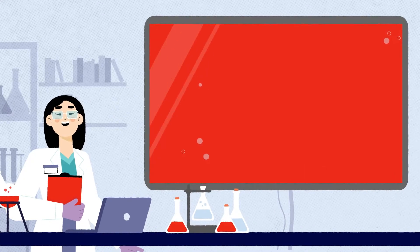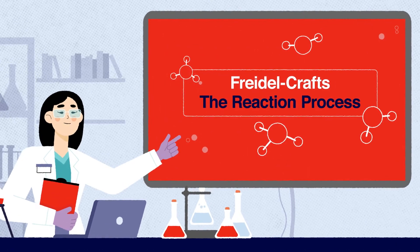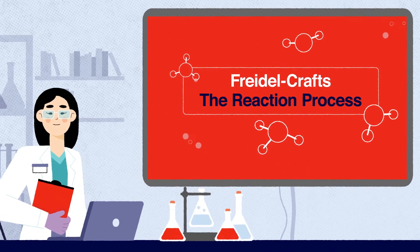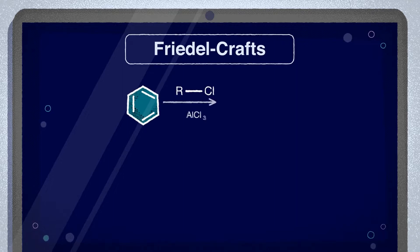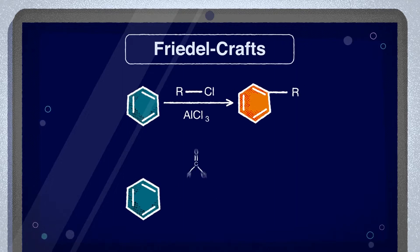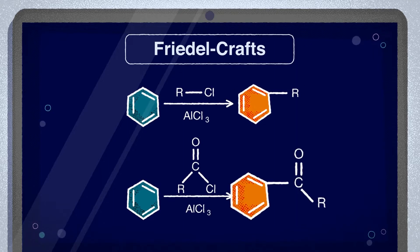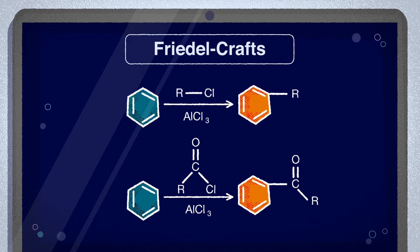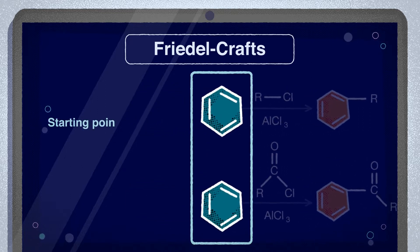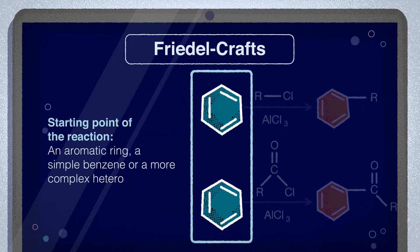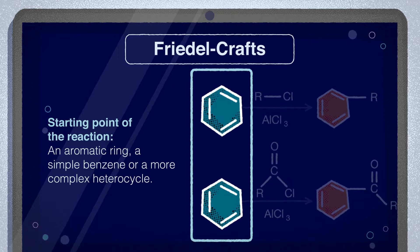So let's take a look at the reaction process. The starting point of the reaction is always an aromatic ring — a simple benzene or more complex heterocycle.